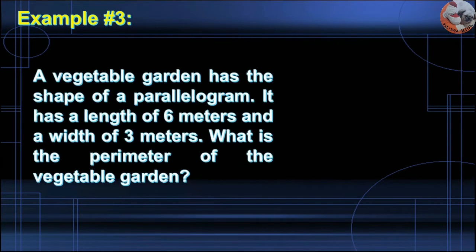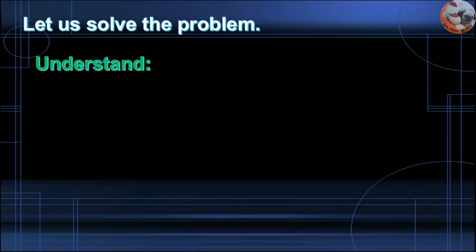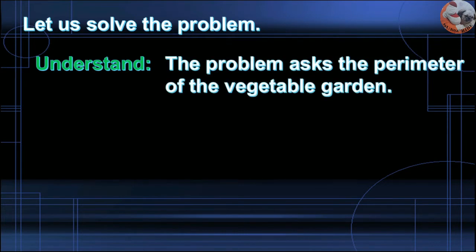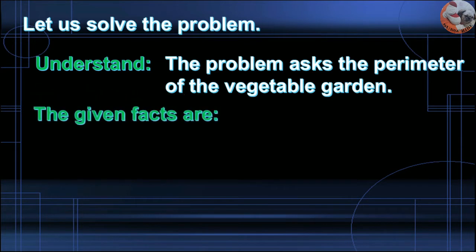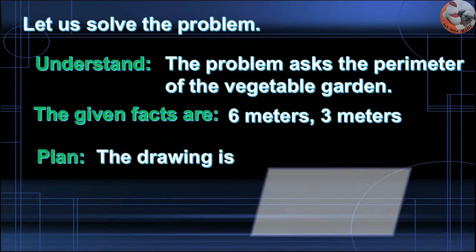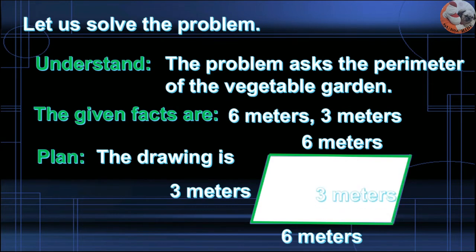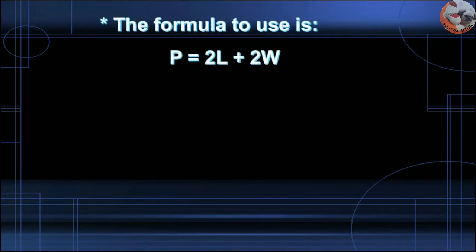Example number three: The vegetable garden has the shape of a parallelogram. It has a length of 6 meters and a width of 3 meters. What is the perimeter of the vegetable garden? Understand: the problem asks for the perimeter; given facts are 6 meters and 3 meters. Plan — the drawing shows a parallelogram where opposite sides are equal: 6 meters and 3 meters on each pair.